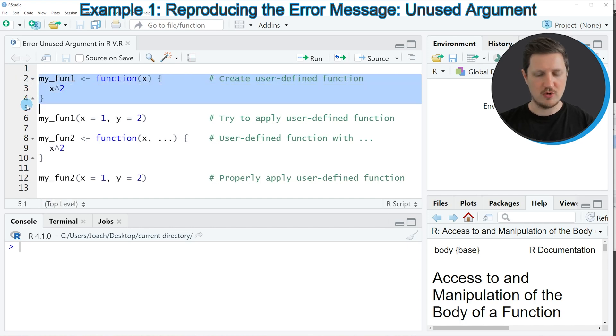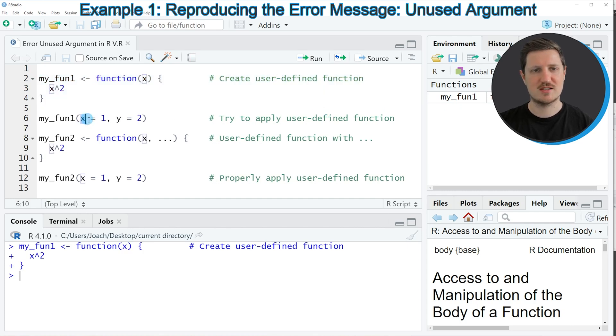If you run lines 2 to 4 of the code, you can see at the top right that this function myfun1 is appearing. Now let's assume that we want to apply this function to two input values, the values x and y, as you can see in line 6 of the code.